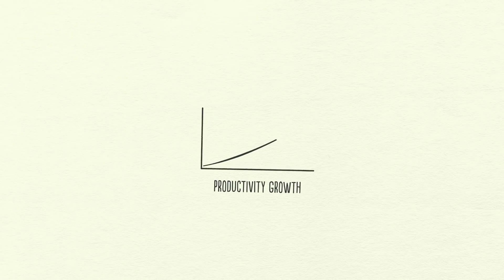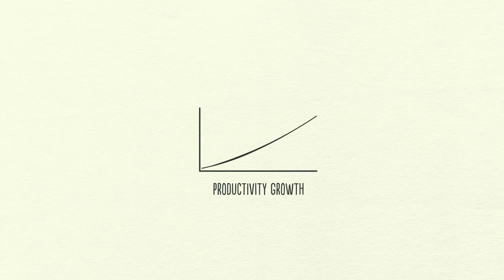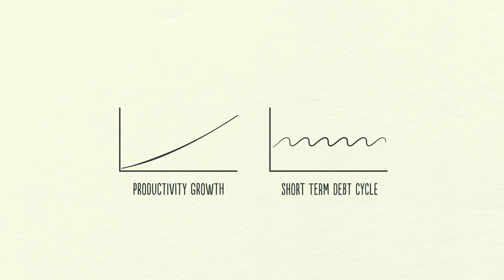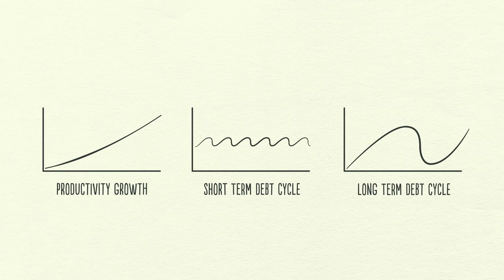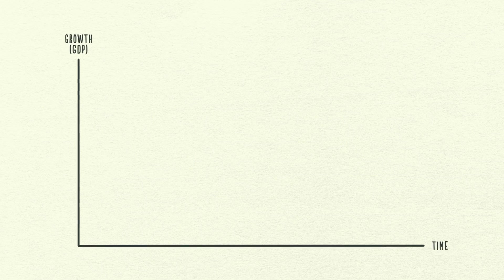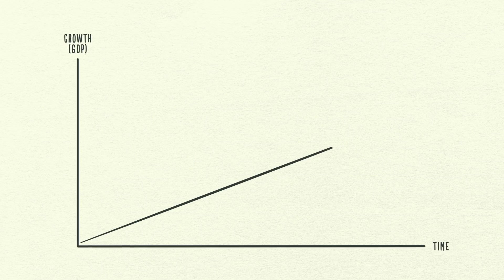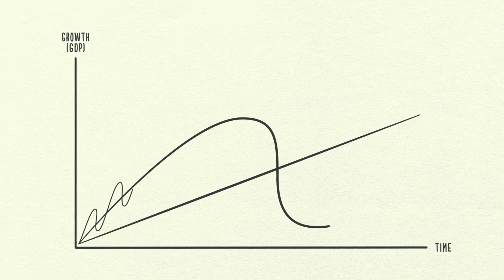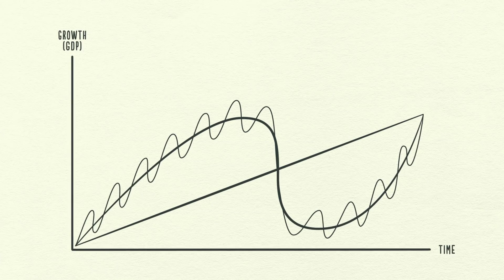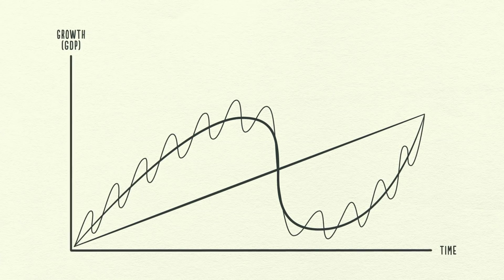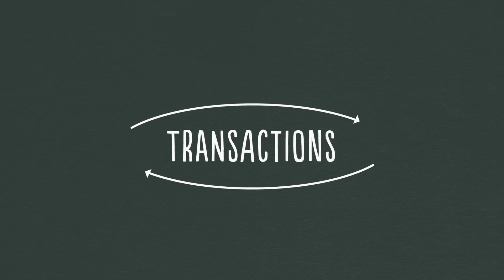Number one, productivity growth. Number two, the short-term debt cycle. And number three, the long-term debt cycle. We'll look at these three forces and how laying them on top of each other creates a good template for tracking economic movements and figuring out what's happening now. Let's start with the simplest part of the economy: transactions.